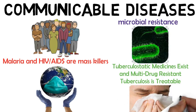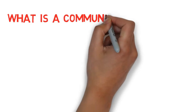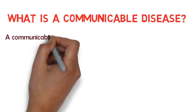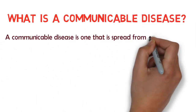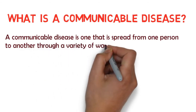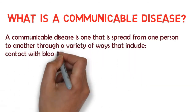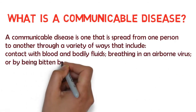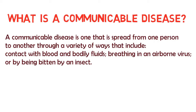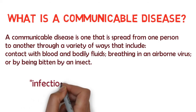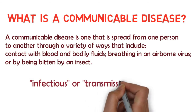For instance, even though tuberculostatic medicines exist, multi-drug resistant tuberculosis is treatable, yet millions of people still die of tuberculosis each year. A communicable disease is one that is spread from one person to another through a variety of ways, including contact with blood and body fluids, breathing in an airborne virus, or by being bitten by an insect. Consequently, communicable diseases are sometimes referred to as infectious or transmittable diseases.